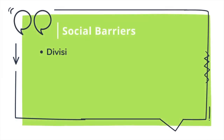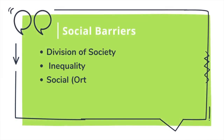Let's discuss the first barrier, which is the social barrier. Social barrier can further be classified under four headings: division of society, inequality, social values and religion.